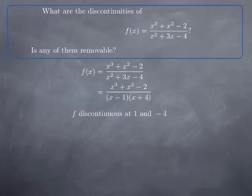To see if they are removable or not, we need to look at the limit of f at 1 and at -4. Remember that a discontinuity is removable if the limit of the function at that point exists, and non-removable otherwise.